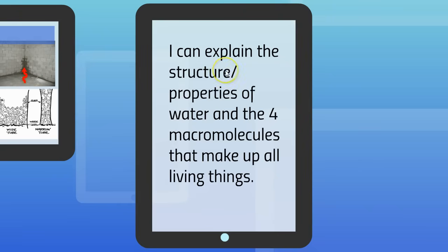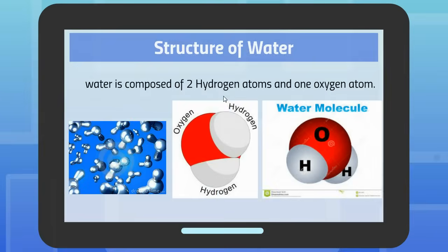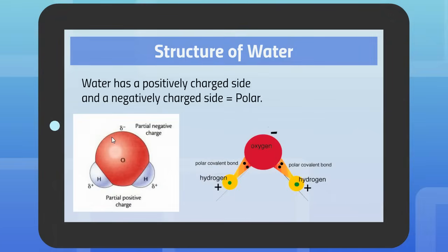We are just in this particular video doing structure and properties of water. The structure of water is basically two hydrogen atoms and an oxygen atom. These two little wings over here are the hydrogens and this part is the oxygen. The larger oxygen molecule is negatively charged and the smaller hydrogen atoms are more positively charged. That makes one side of the water molecule positively charged and one side negatively charged.